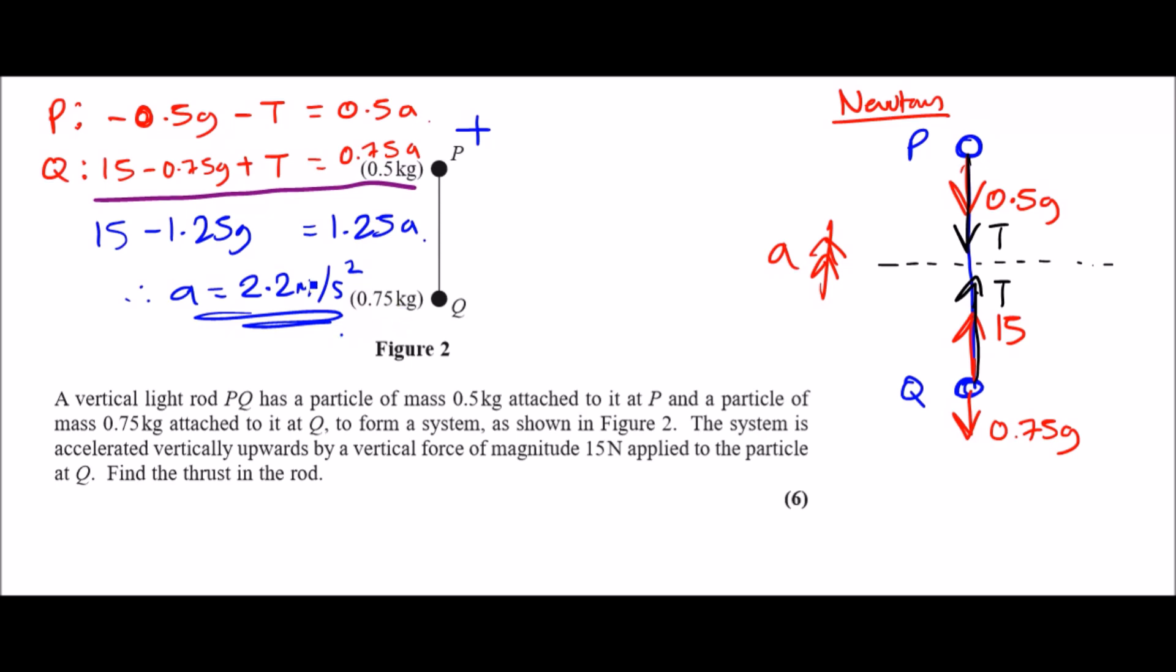Finally, to find tension, pick any of these two and you should get a result. I'm going to pick the first equation because it looks easy to work with. So firstly, adding 0.5g across, we should have minus T equals 0.5a plus 0.5g. Now notice how this value is actually negative.